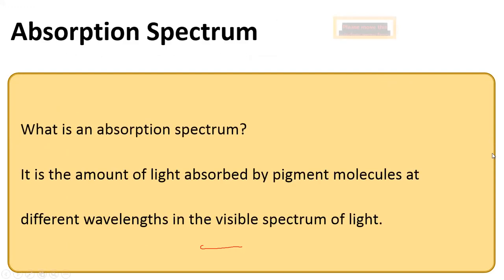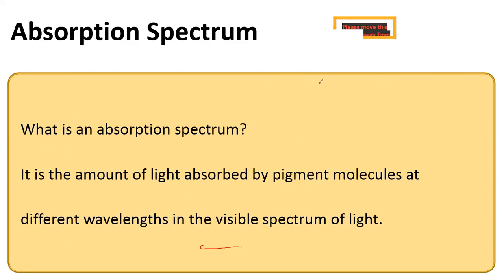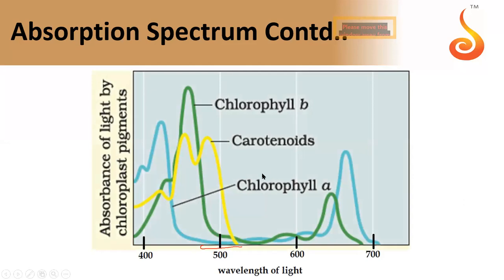The definition of absorption spectrum is important: it is the amount of light absorbed by a pigment at different wavelengths in the visible spectrum of light. Every pigment has its own wavelength of absorption, so the amount of light absorbed by a pigment at different wavelengths in the visible region is called the absorption spectrum.